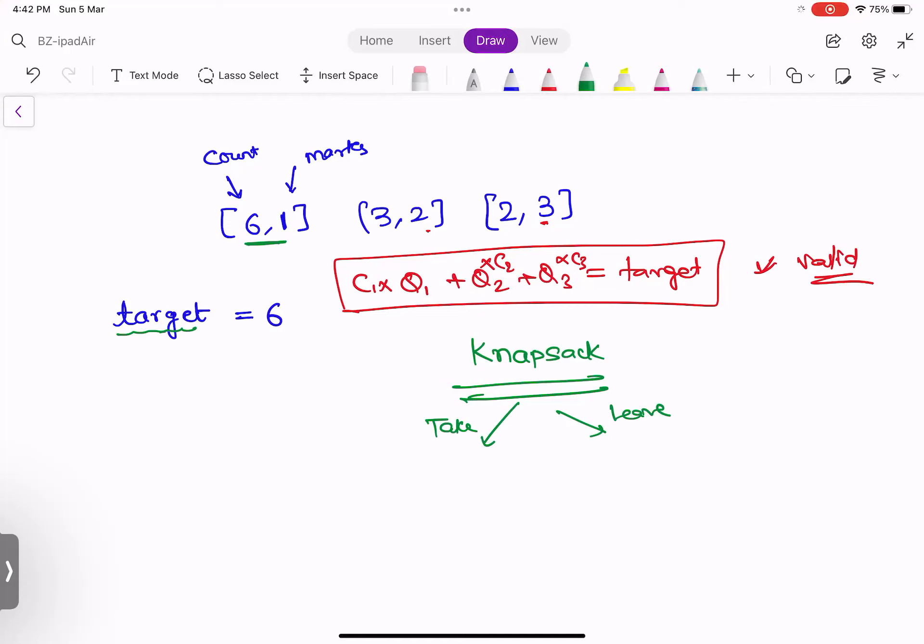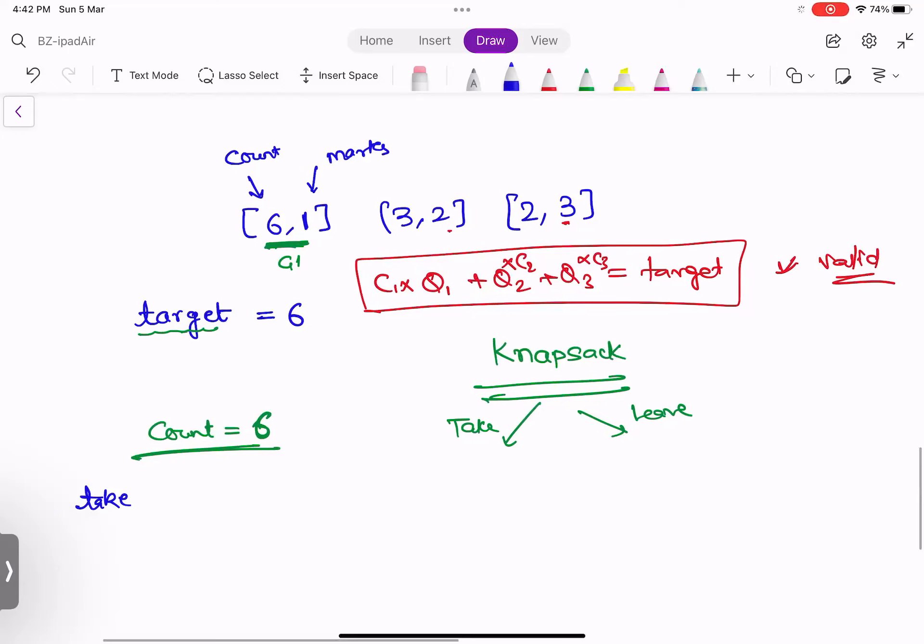The twist they have added here is, now when you come to this group one, it is no more take it or leave it. It is about, if total count is six, can you tell me what are the options? If total count is six, what are my choices? Rather than take it or leave it, it is something else.